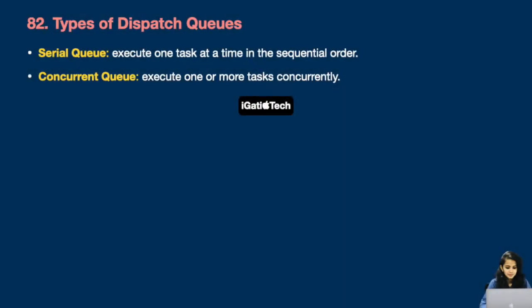Question number 82: Types of dispatch queues. There are two types of dispatch queues: serial queue and concurrent queue. A serial queue executes one task at a time in sequential order, whereas a concurrent queue executes one or more tasks concurrently.